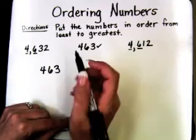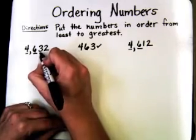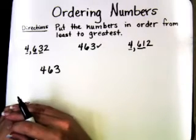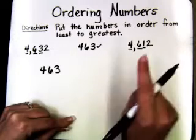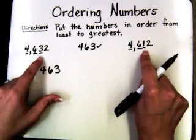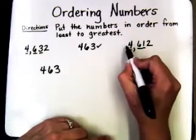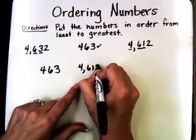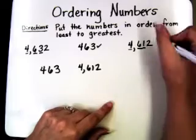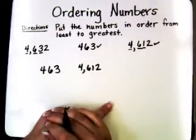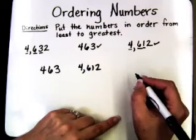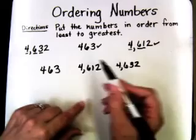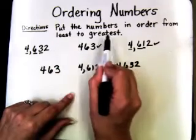So let's keep moving. In the tens place in this number we have a three, and in the tens place in this number we have a one. Now we can tell a difference — we know that one is smaller than three. So that tells us that this number is our second number: 4,612. I put a little check beside it, and the last number, our greatest number, will be 4,632. We wrote them from least to greatest.